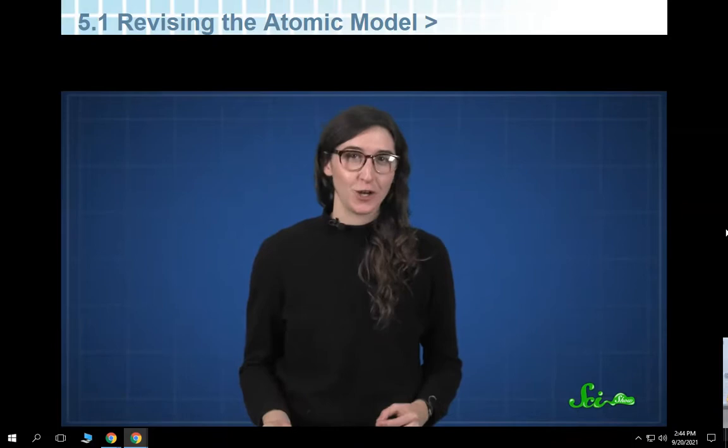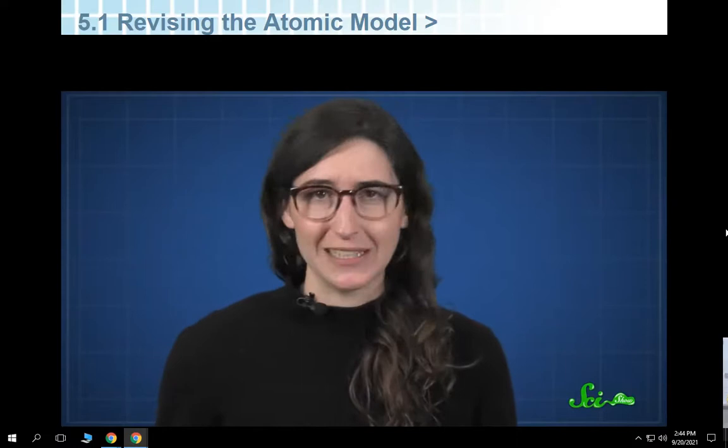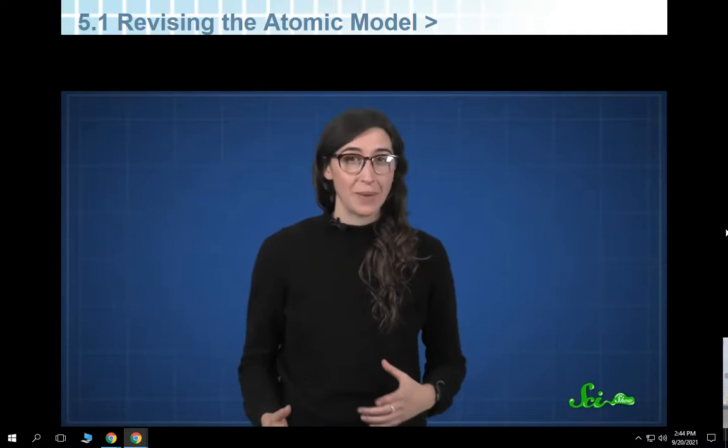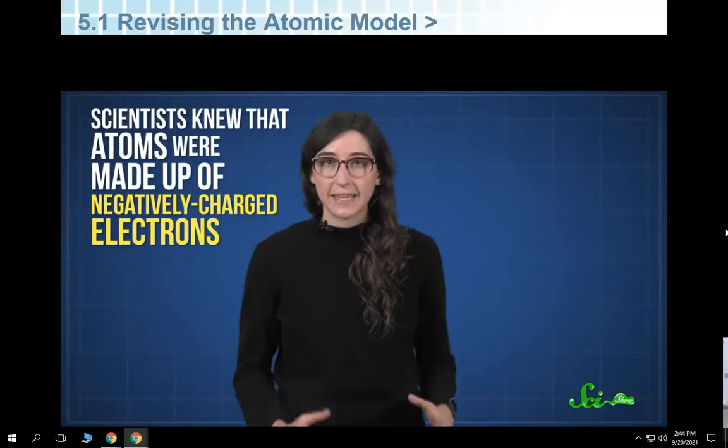Have you ever looked carefully at the intro for this show? If you have, you might have noticed there's a diagram of an atom with little electrons orbiting the nucleus. But here's the thing — atoms don't actually look like that. Over the years, scientists have come up with different atomic models based on what we know about how they work. The most accurate atomic models are a little more complicated, because atoms are complicated.